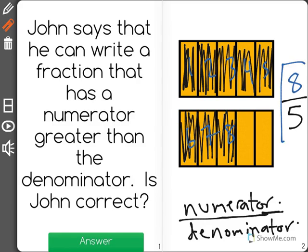So my fraction for this would be eight fifths. So is John correct? Yes, he is. You can have fractions where the numerator is greater than the denominator. They are known as improper fractions.